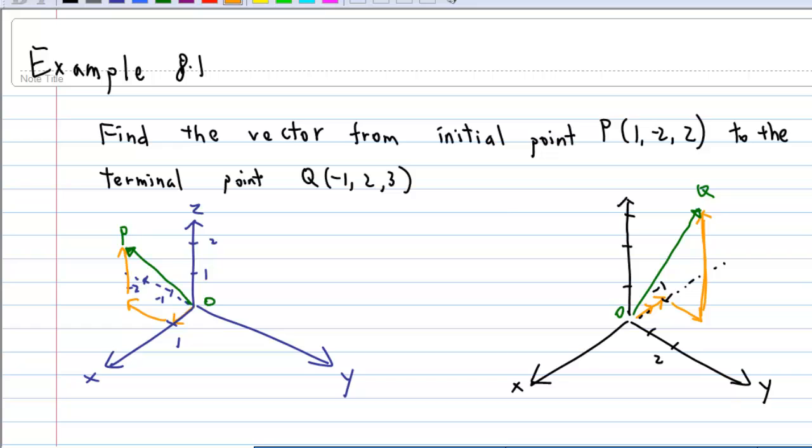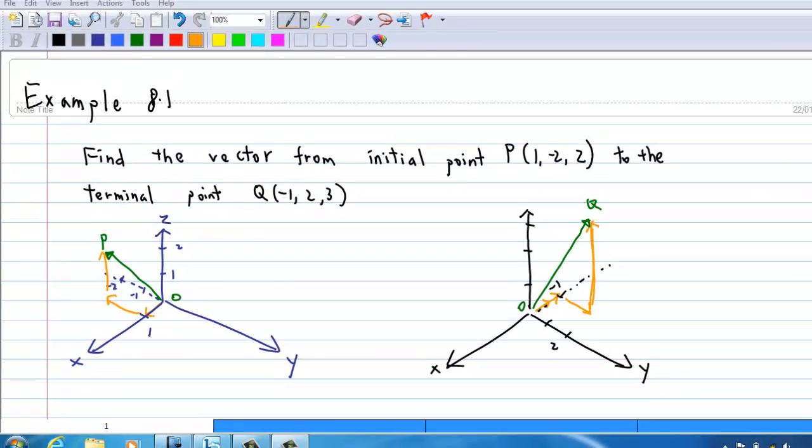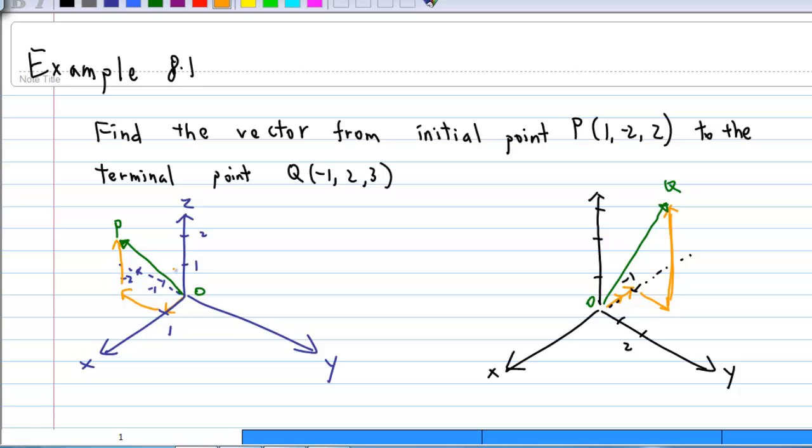Suppose P has x-coordinate 1, y-coordinate -2, z-coordinate 2. Then the position can be visualized from here. Given the x, y, z-coordinate system, move along the x-axis 1 unit, then move along the y-axis towards -2, and then move parallel to the z-axis towards 2. Then we have the point P.